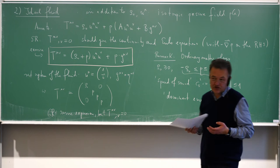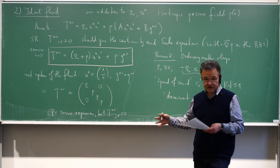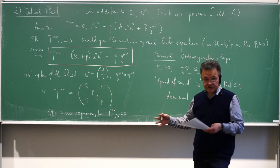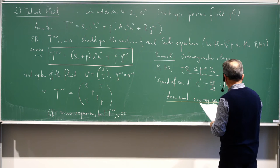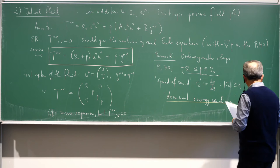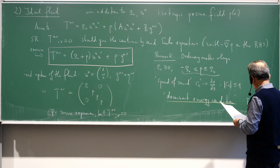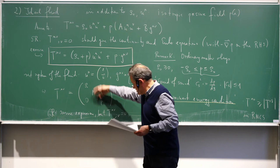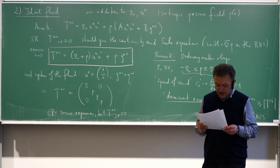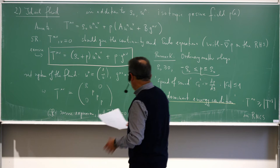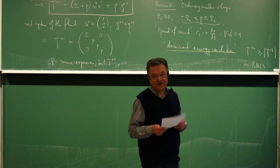The dominant energy condition is used as an assumption in various theorems proven in general relativity. In a Riemann normal coordinate system, it means T^{00} is greater than or equal to the absolute value of the spatial components — in this simple case, the pressure. Most importantly, it says that no signal can propagate faster than the speed of light in general relativity.